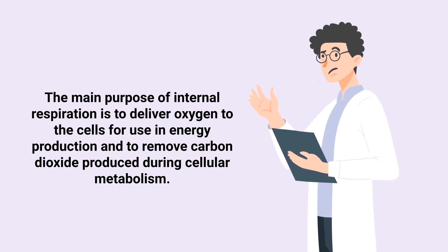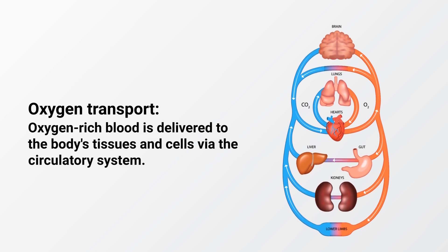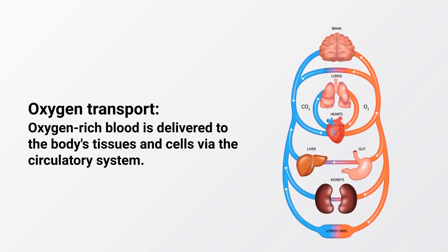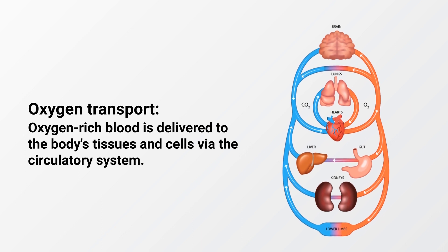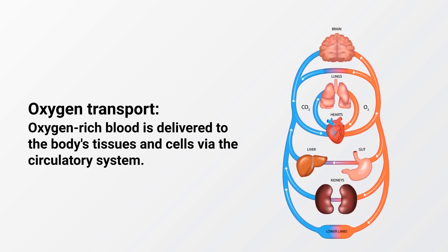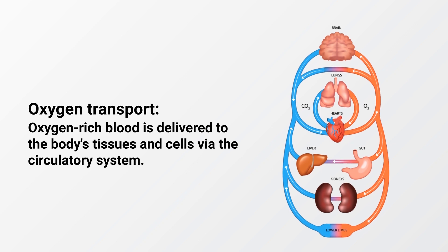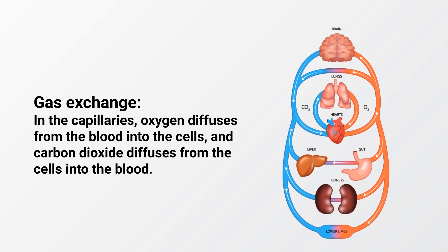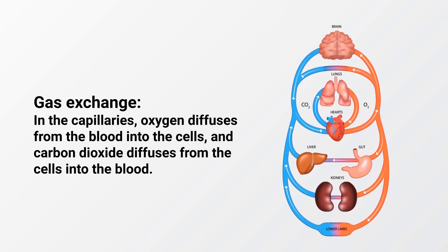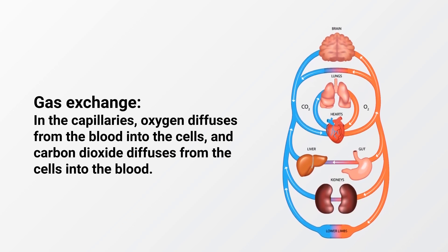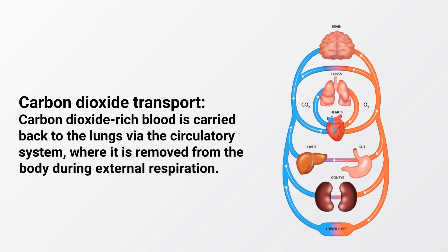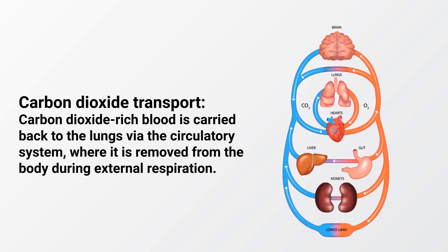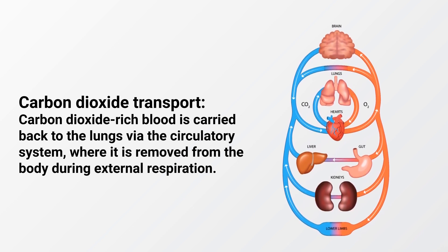The main purpose of internal respiration is to deliver oxygen to the cells for use in energy production and to remove carbon dioxide produced during cellular metabolism. The primary steps include: oxygen transport — oxygen-rich blood is delivered to the body's tissues and cells via the circulatory system; gas exchange in the capillaries — oxygen diffuses from the blood into the cells and carbon dioxide diffuses from the cells into the blood; and carbon dioxide transport — carbon dioxide-rich blood is carried back to the lungs via the circulatory system.